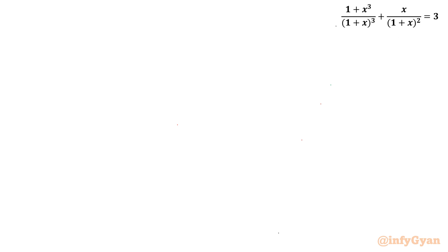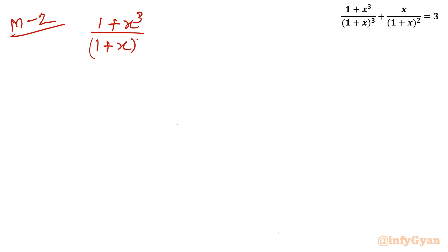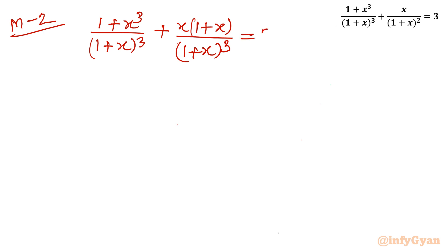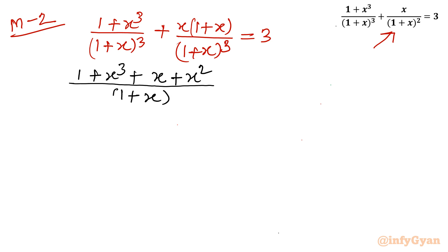Now for Method 2, the conventional general method. I will keep the first term as (1 + x³)/(1 + x)³, and for the second term multiply numerator and denominator by (1 + x) to get x(1 + x)/(1 + x)³. Now both denominators are the same, so adding numerators: (1 + x³ + x + x²) / (1 + x)³ = 3.